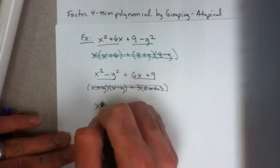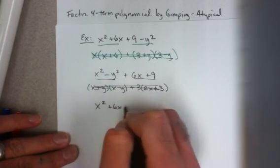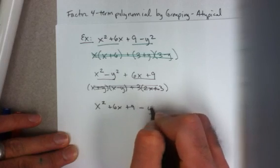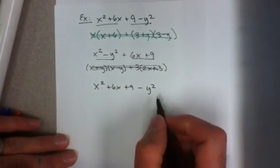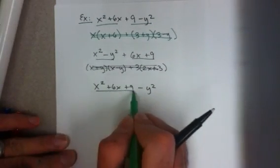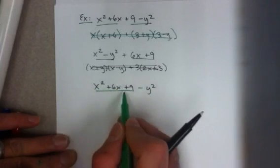So here's why this is slightly atypical. It turns out that if you look closely enough at this four-term polynomial, the first three terms make up a perfect square.